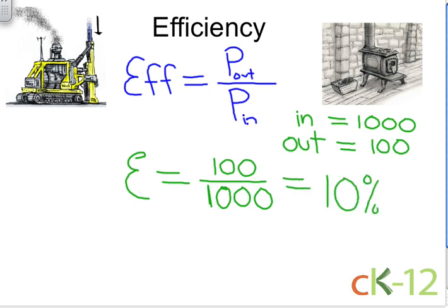So we would say this wood-burning stove has an efficiency of 10 percent.